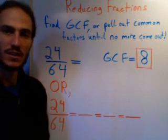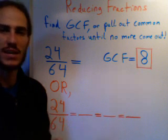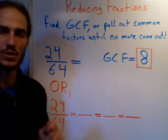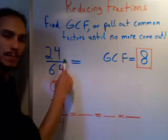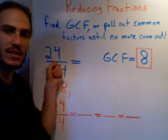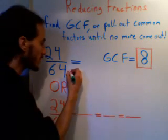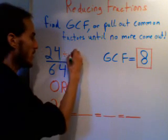And what you're going to do, just like when we created an equivalent fraction, we do the same thing to the top that we do to the bottom, and vice versa. So, we're going to divide top and bottom, doesn't matter if you do top or bottom first, we're going to divide each of these numbers here by our GCF. In this case, it's 8.